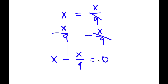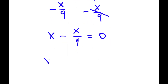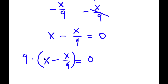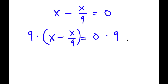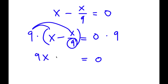Now I'm going to go ahead and multiply both sides by 9. So now I have x minus x over 9 times 9 is equal to 0 times 9, which is 0. The reason I multiplied 9 on both sides is to get rid of this denominator. When I multiply 9 with x minus x over 9, the 9 distributes: 9 times x is 9x, and 9 times negative x over 9 — the two 9s cancel out — leaving negative x.